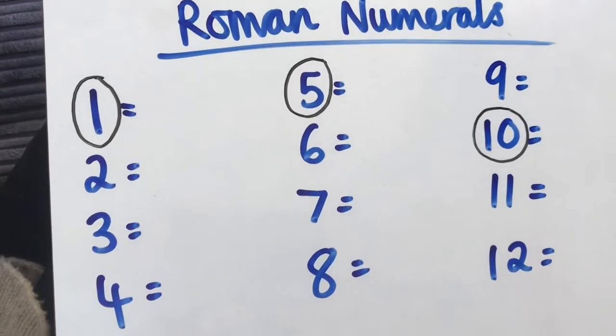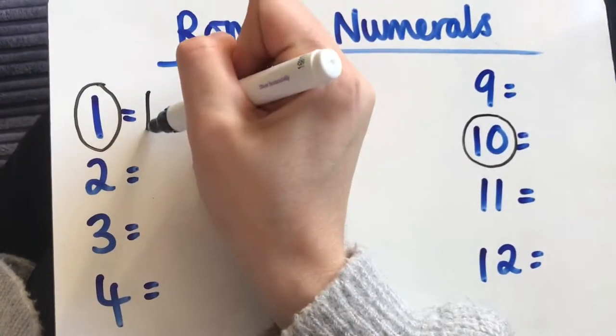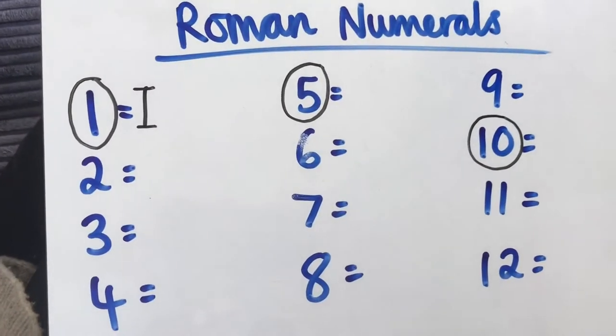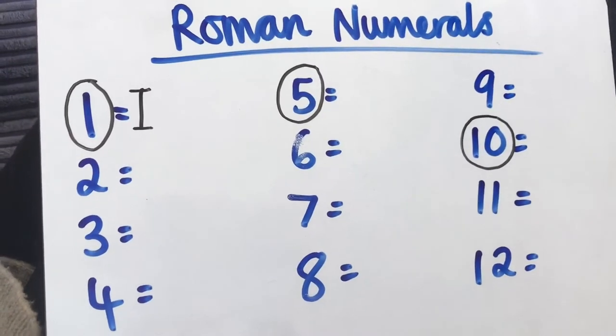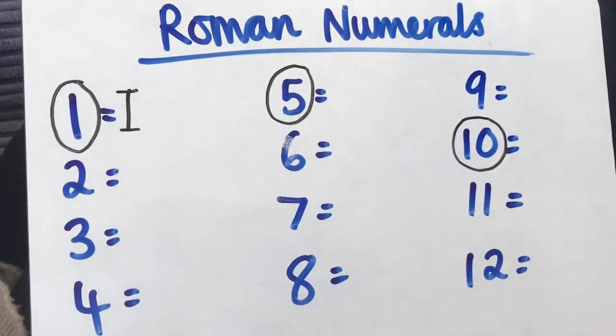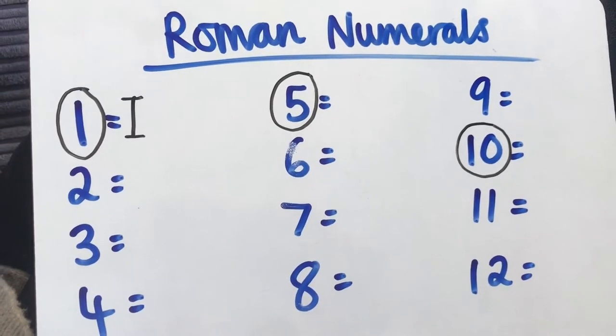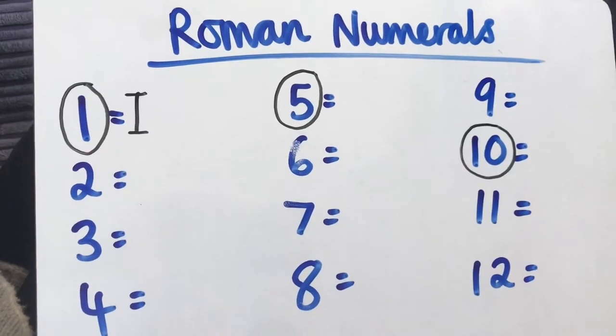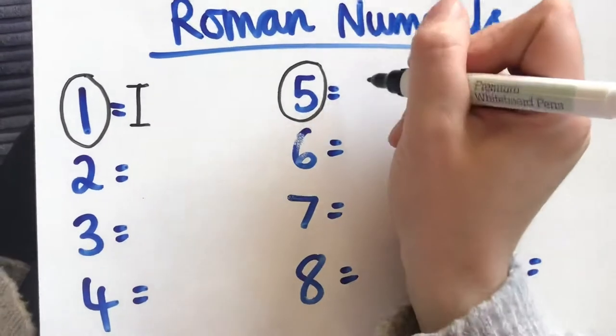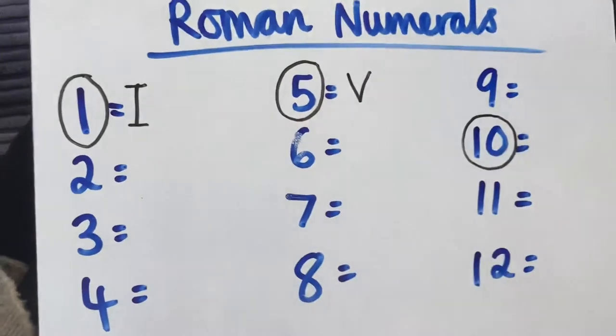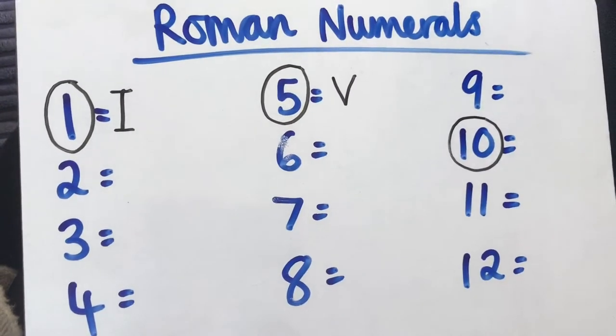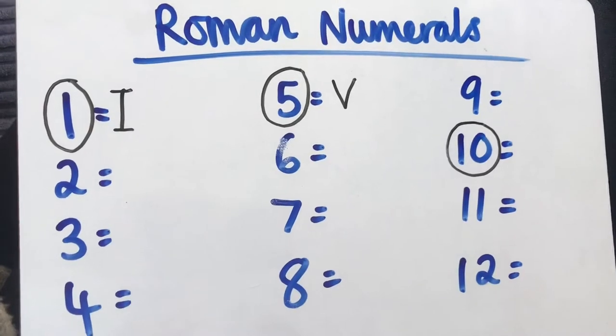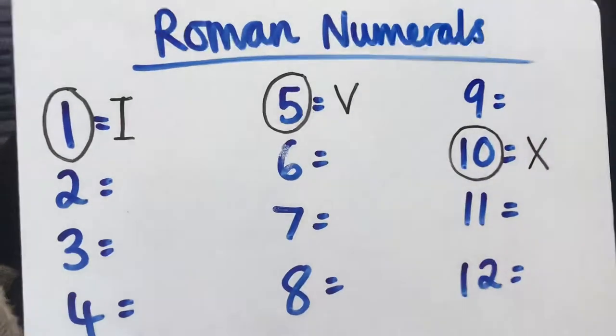The number 1 is quite helpful because it kind of looks like a number 1 anyway. Number 1 is represented with an I. So the number 1 in Roman numerals is just an I, one I. Number 5 is a V. It's almost like a secret code isn't it? So number 1 is I, number 5 is a V, number 10 is an X.